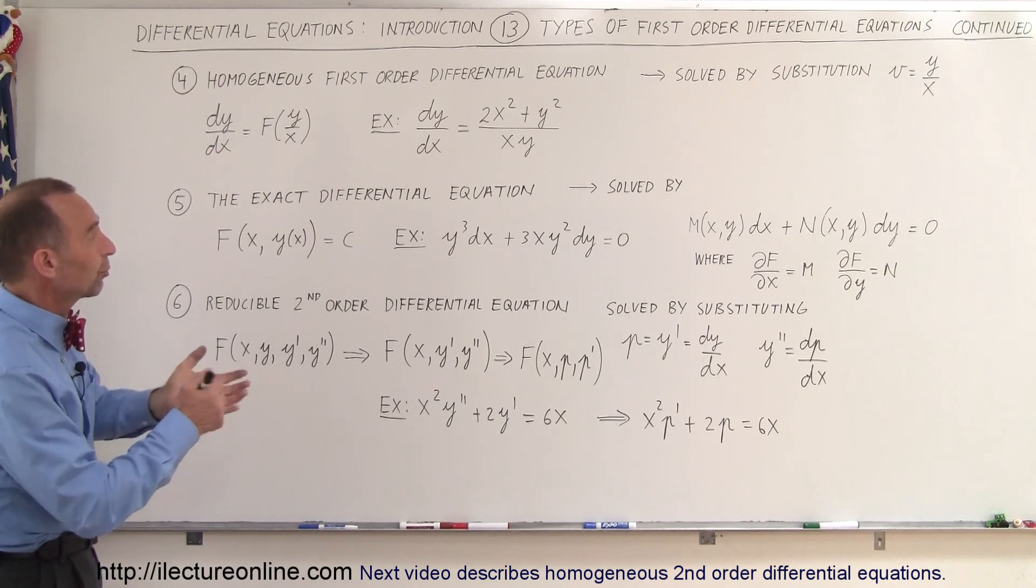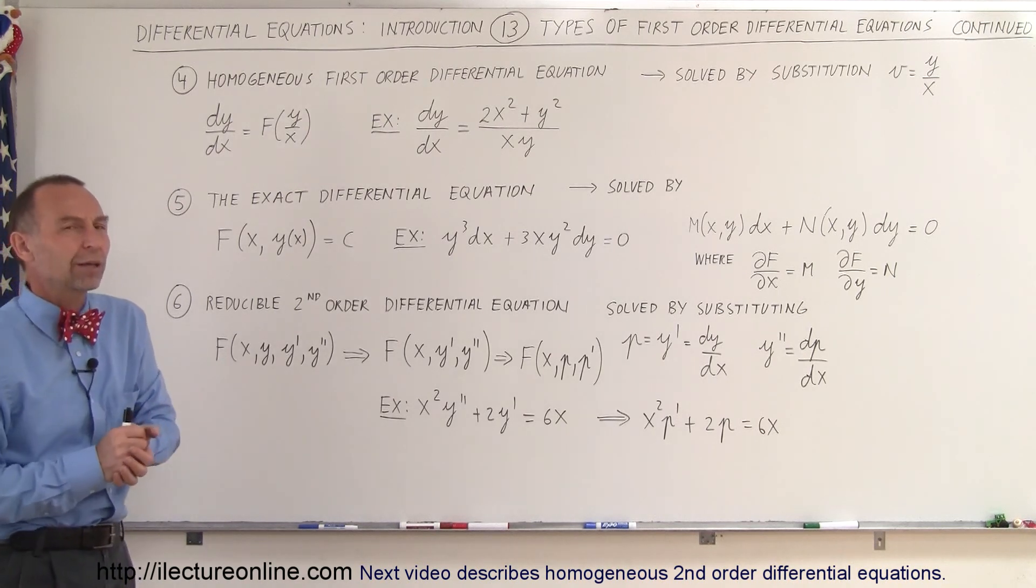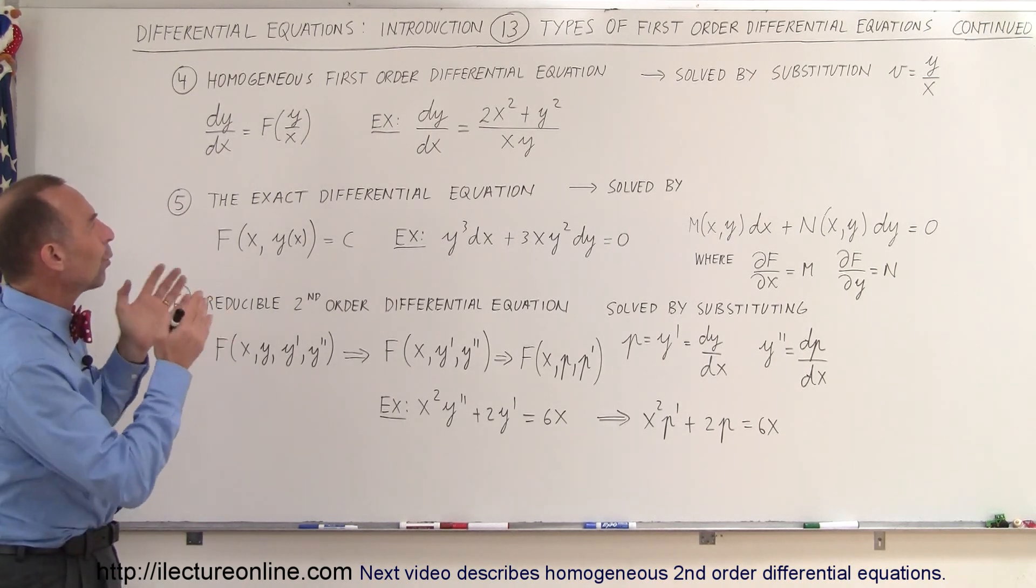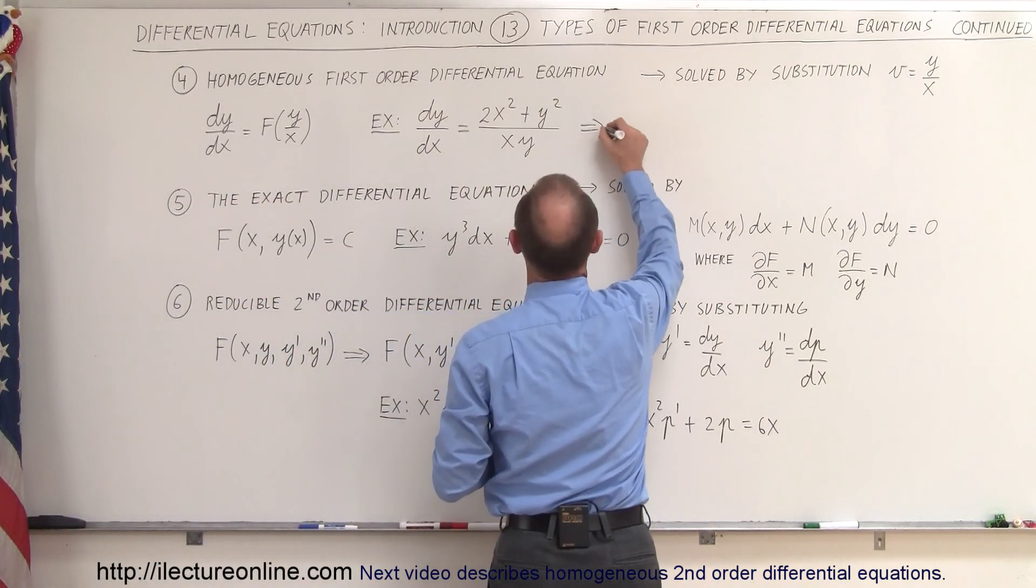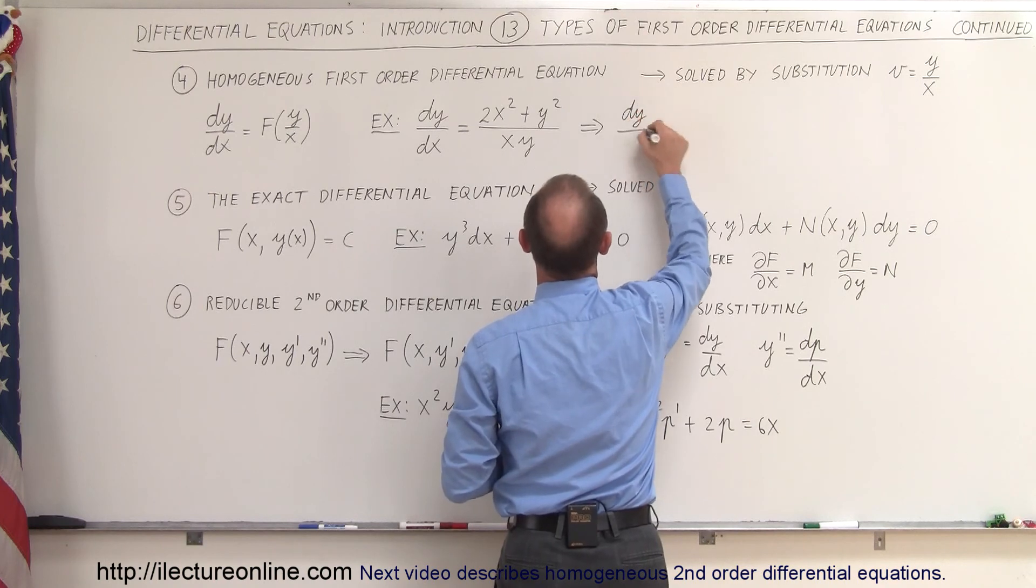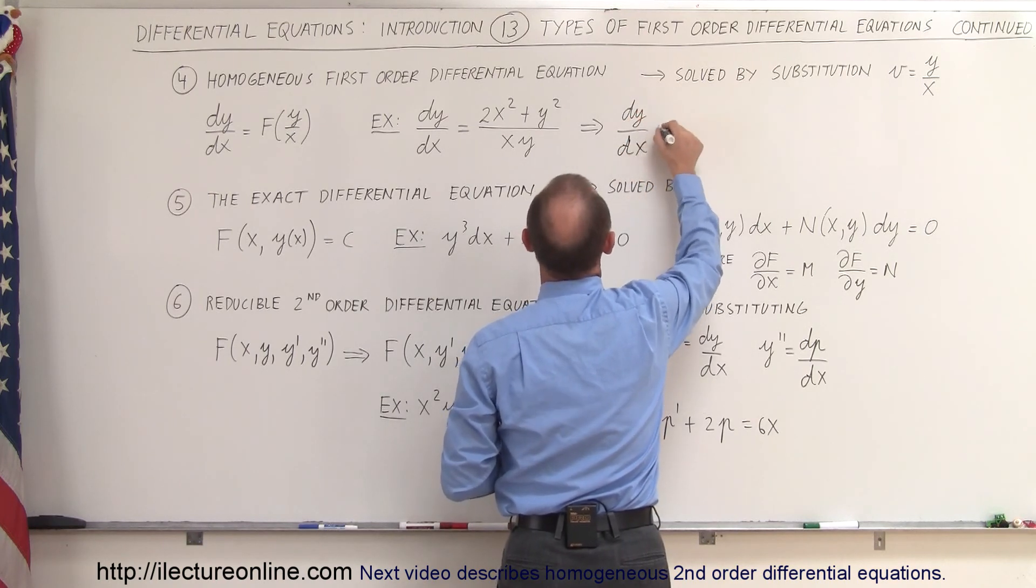dy/dx equals 2x squared plus y squared divided by xy. You say, well wait a minute, I don't see the y over x here. Well, we can change the equation. We can say, okay, let's rewrite this equation. We can say dy/dx is equal to, when we divide this into there.